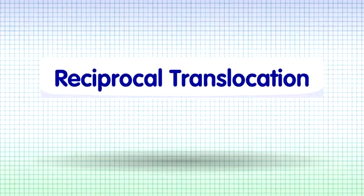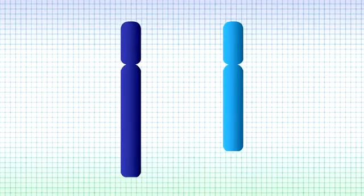A reciprocal translocation occurs when two chromosomes swap a piece of chromosomal material. In this example, a piece of chromosomal material from chromosome 1 has swapped onto chromosome 2, and a piece of chromosome 2 has swapped back onto chromosome 1.